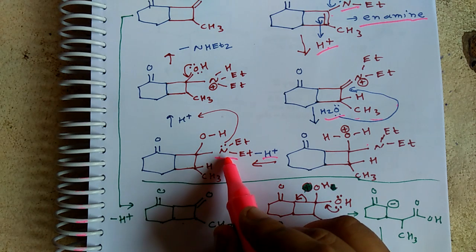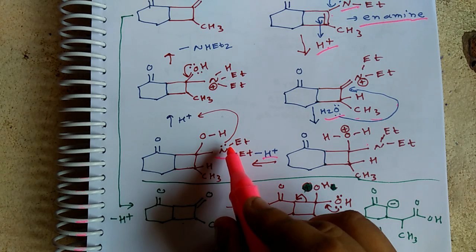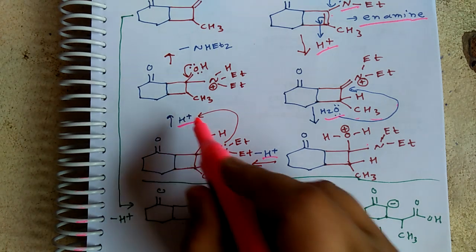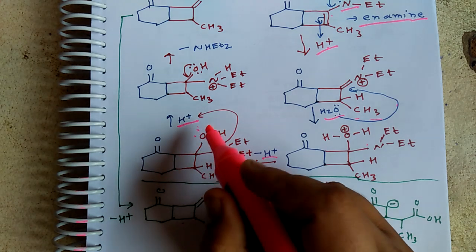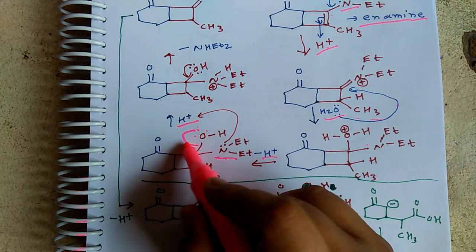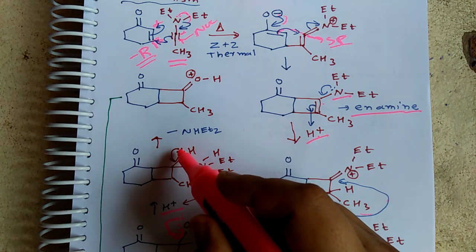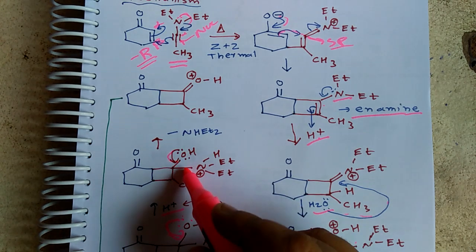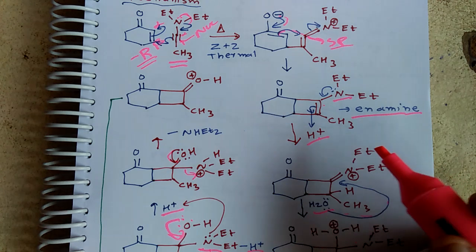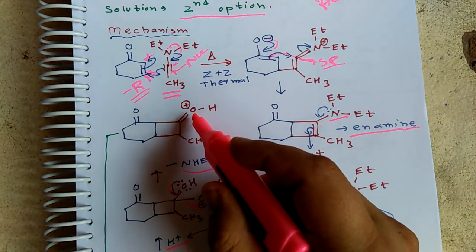Again protonation occurs in order to make diethylamine a good leaving group. Diethylamine is a strong base, and strong bases are not good leaving groups. So we need to protonate it. Then the oxygen will push electrons, as shown above, and the diethylamine will be removed as a good leaving group. NEt2H will get removed, and the intermediate is again protonated.